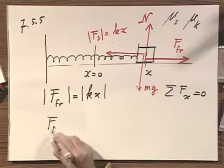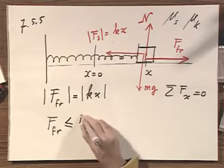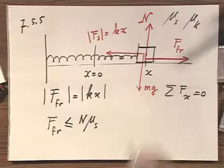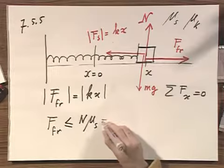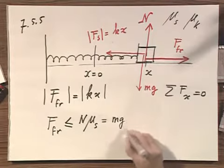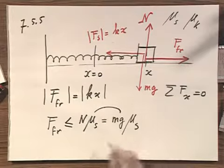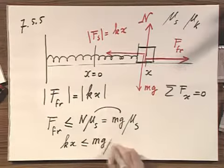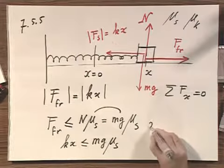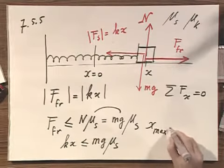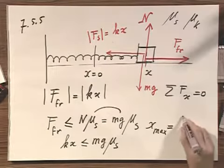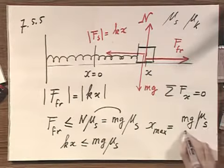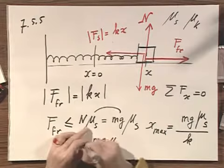The frictional force is always less than or equal to the normal force times the static friction coefficient - it's static because it has to start moving from zero speed. N equals mg, so this equals mg times μs. And so the requirement then is that kx must be less than or equal to mg times μs. So what you find is that the maximum possible distance x equals mg times μs divided by k. That's my final result.